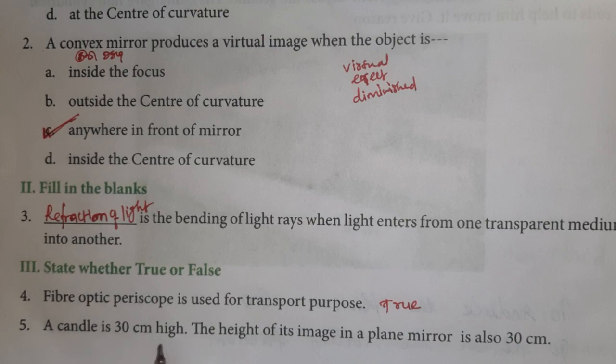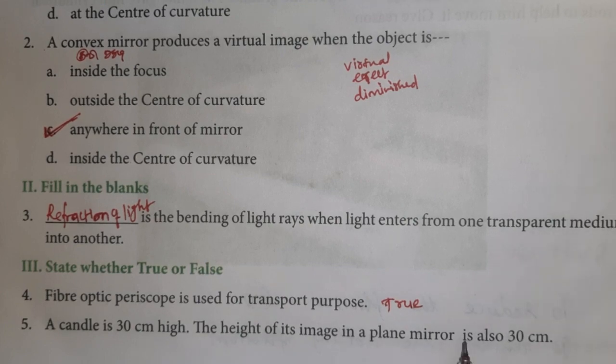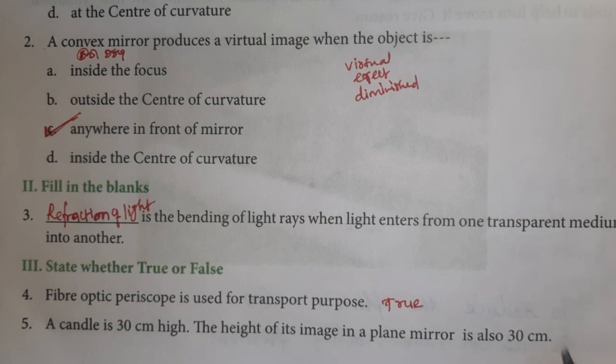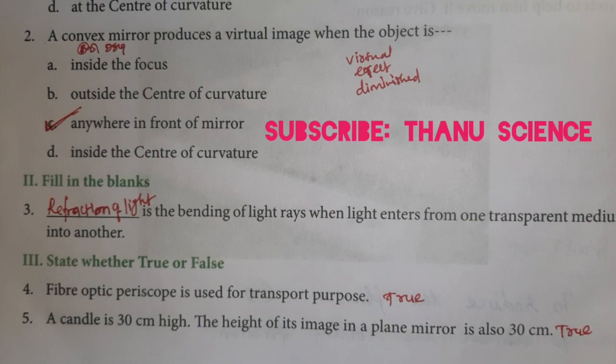A candle is 30 cm high. The height of its image in a plane mirror is also 30 cm. For plane mirror, size of object is equal to size of image. This is true. Thank you students.